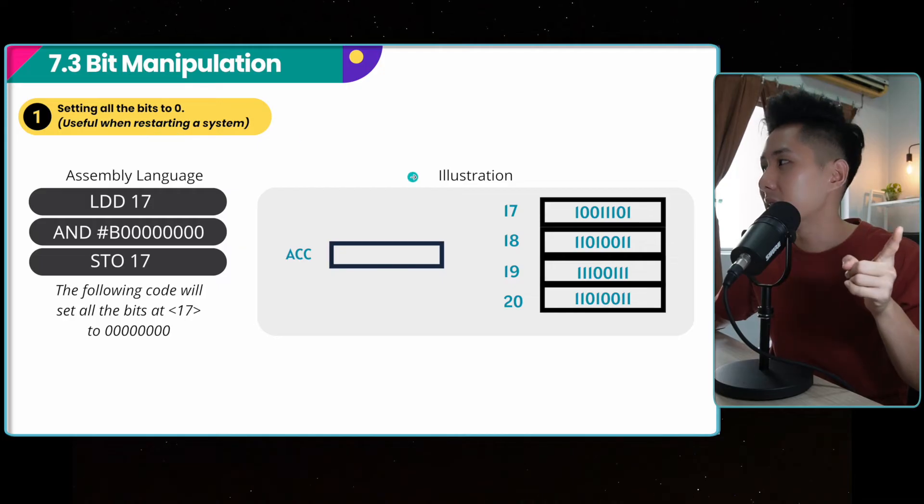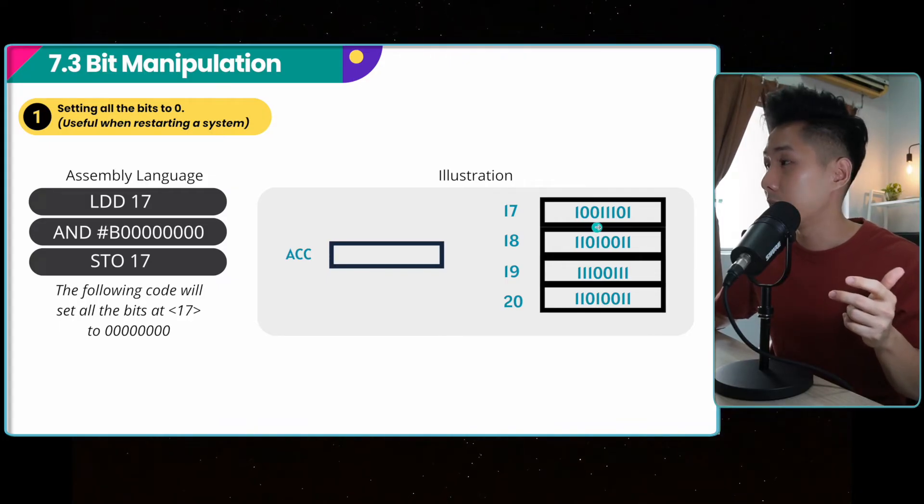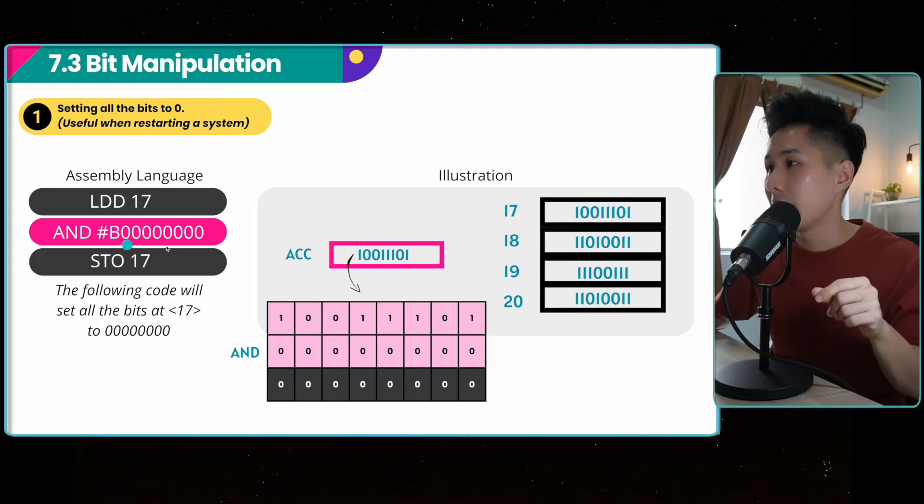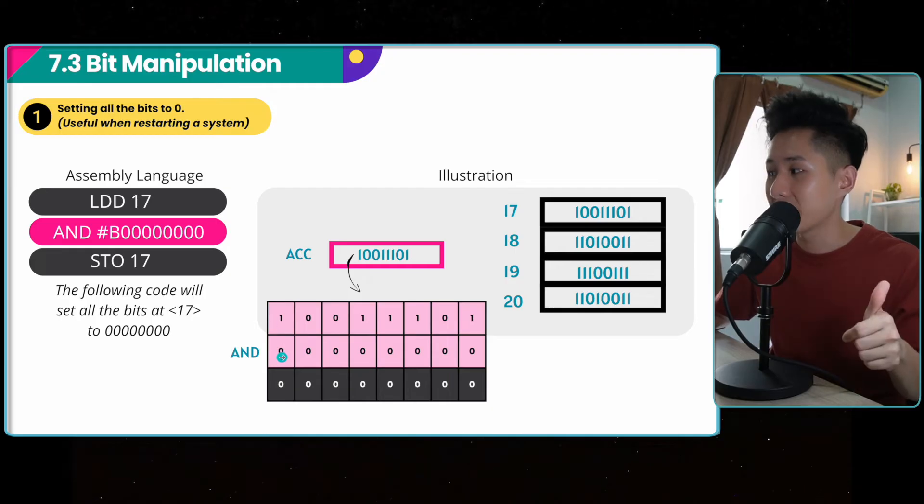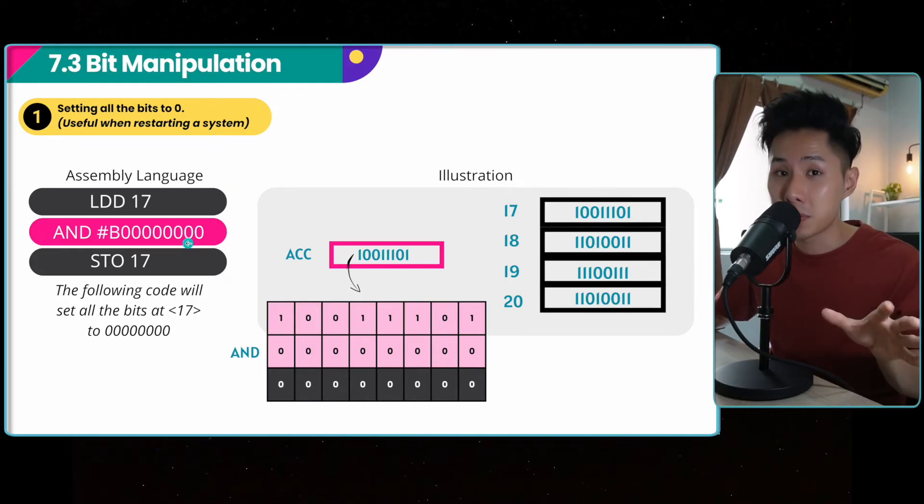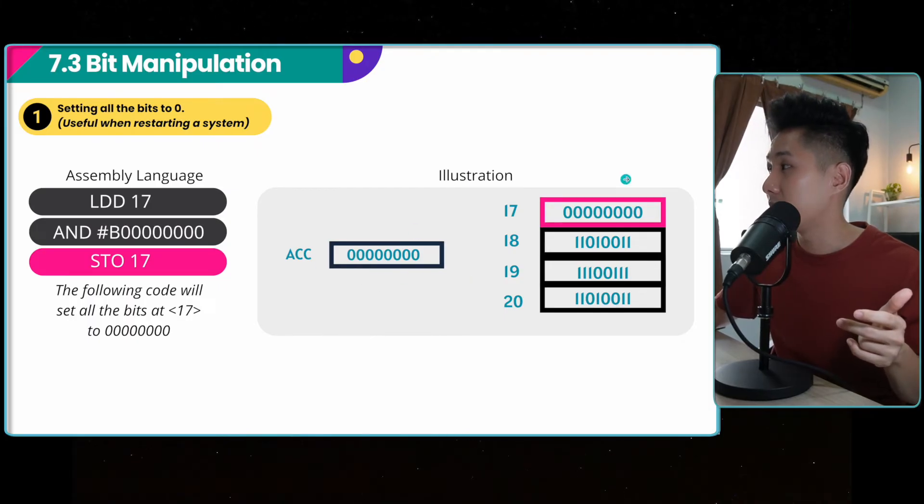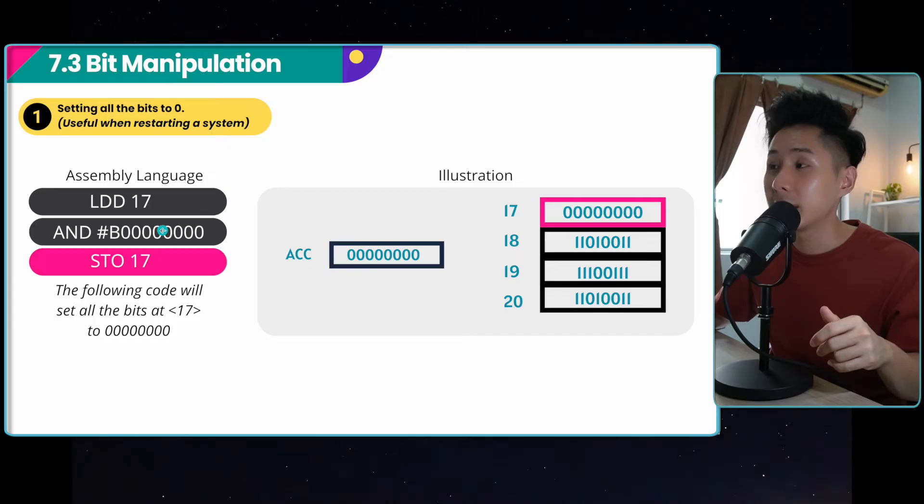So let's do the first one. How do we set all the bits inside a system to zero? Let's say in location 17, I want to restart it. I want to set everything to zero. So I'm going to write an assembly code, load everything that is inside 17 to my ACC. And the second step is the essence of it. I apply a bitwise AND operator. And what it does is that it will compare the two digits for each bit and then apply an AND operator to it. If you remember what we talked about in chapter five, AND operator will only give you a result of one when both bits are one. So in this case, because I'm using all zero as my operand, I can set all my bits to zero. And once this is done, I will store all the result in ACC back to location 17. So this is how we set all the bits to zero. We use an AND bitwise operator and put all zero as our operand.